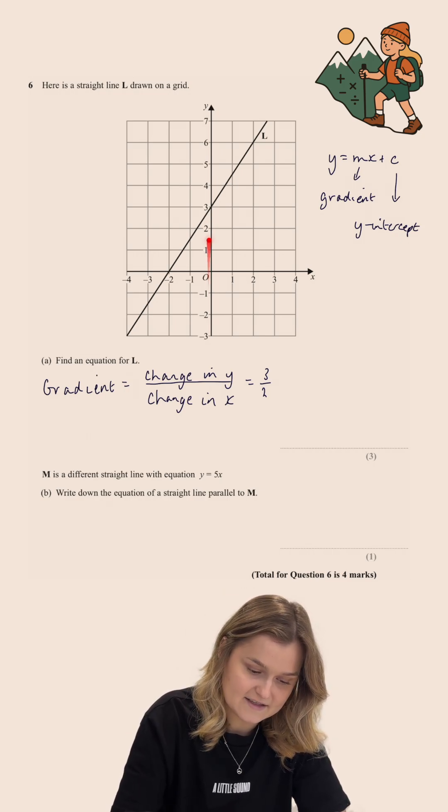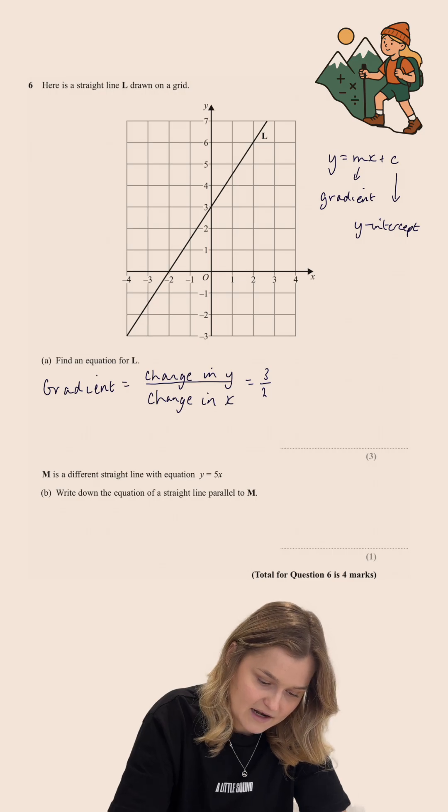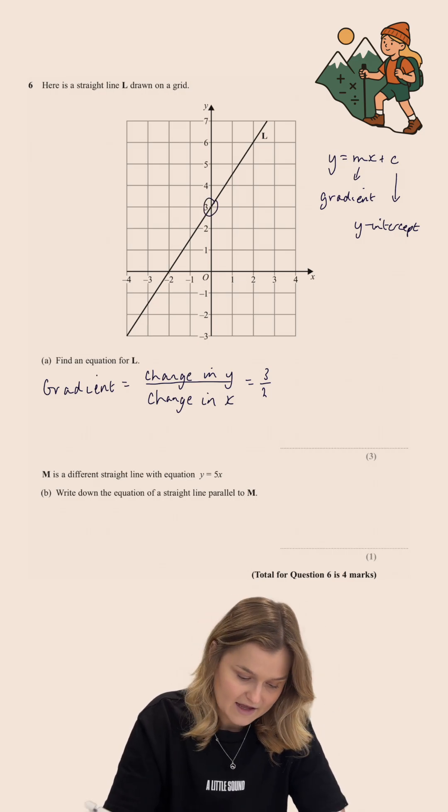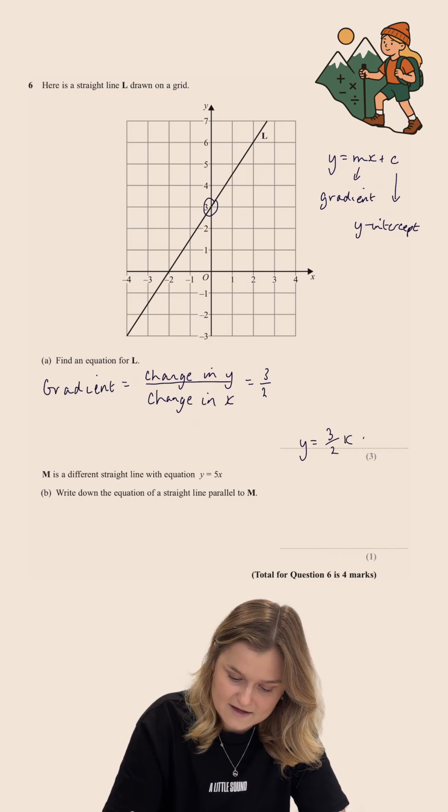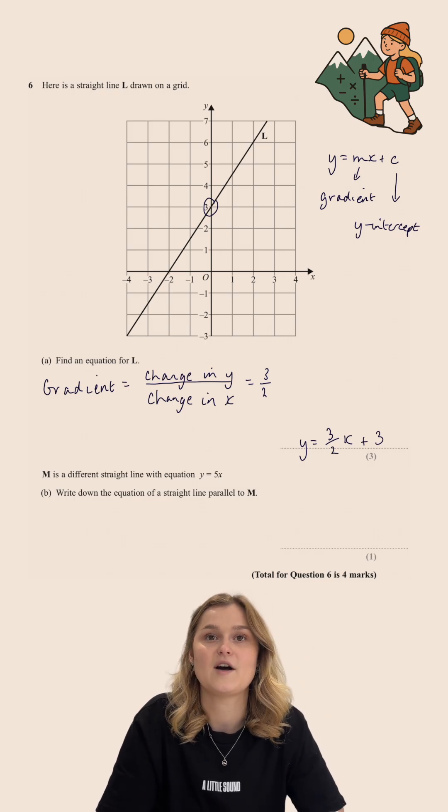And so, my equation is Y equals 3 over 2X, which is our MX, plus 3, which is our plus C.